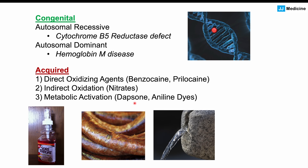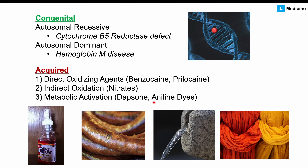Another cause of acquired methemoglobinemia is metabolic activation through exposure to dapsone medication and aniline dyes. Dapsone is a medication used for certain types of leprosy, but also for dermatitis herpetiformis, which is a skin finding in celiac disease.